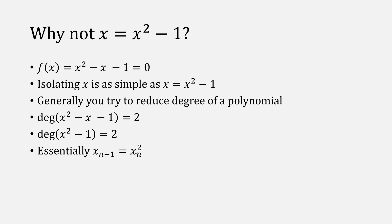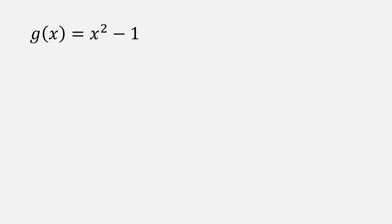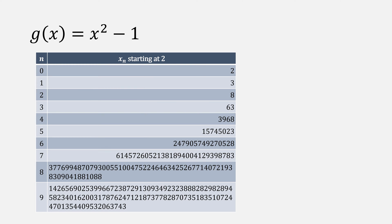So essentially, we're saying x sub n plus 1 is equal to x sub n squared. This will work if you use Wegstein's method, but we'll come back to this. As an example, if we use g of x equals x squared minus 1, and if we start at the value of 2, then this function causes our iterations to diverge monotonically, and quite quickly.